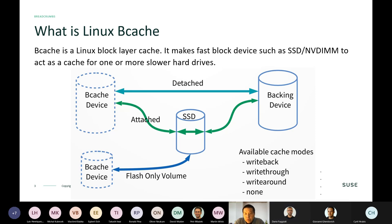For the write-back mode, cache data stays in cache and later goes to the back-end device. For the write-through mode, data for write requests won't stay on the cache device — it goes directly to the back-end. There is also a mode similar to read-around that avoids loading cache-missed data, used for write-intent workloads.